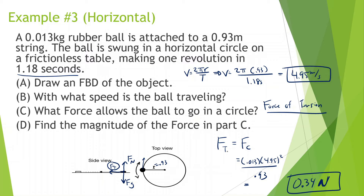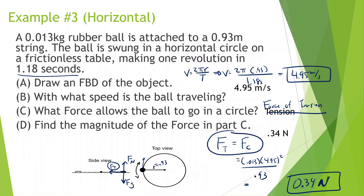A 45-kilogram merry-go-round child stands on the ride's platform 6.3 meters from the center. If her speed as she goes around the circle is 4.1 meters per second, what force is responsible for her circular movement? She's going in a circle, and in this case it is friction. Without friction, she wouldn't be able to move in a circle. Friction is what binds her and allows her to move in a circle.